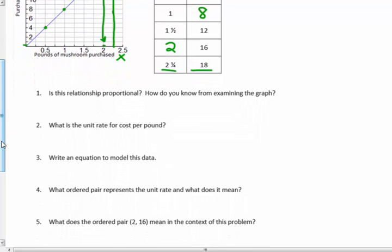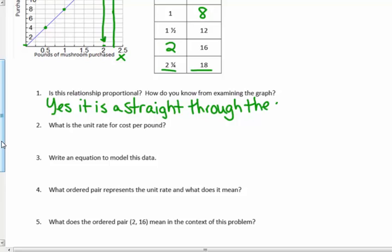Is this relationship proportional? How do you know from examining the graph? Well, yes, it is proportional. It is a straight line because it has a constant rate of $8 a pound through the origin. It is a straight line through the origin.